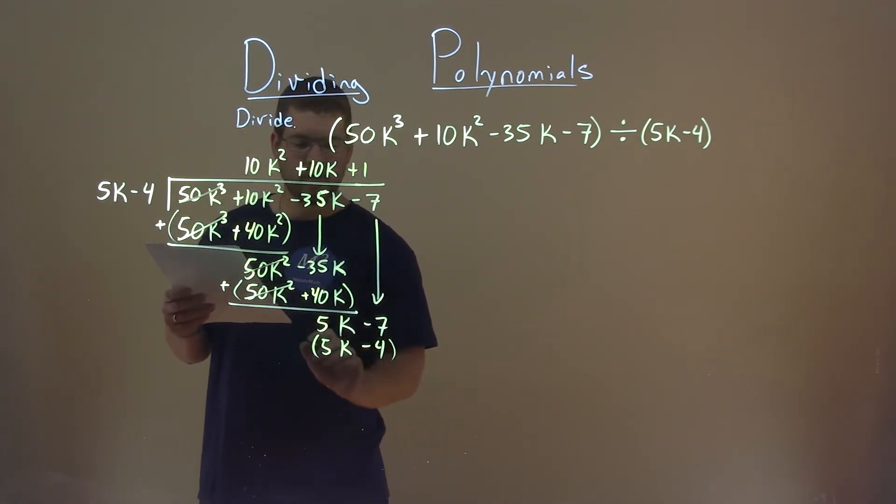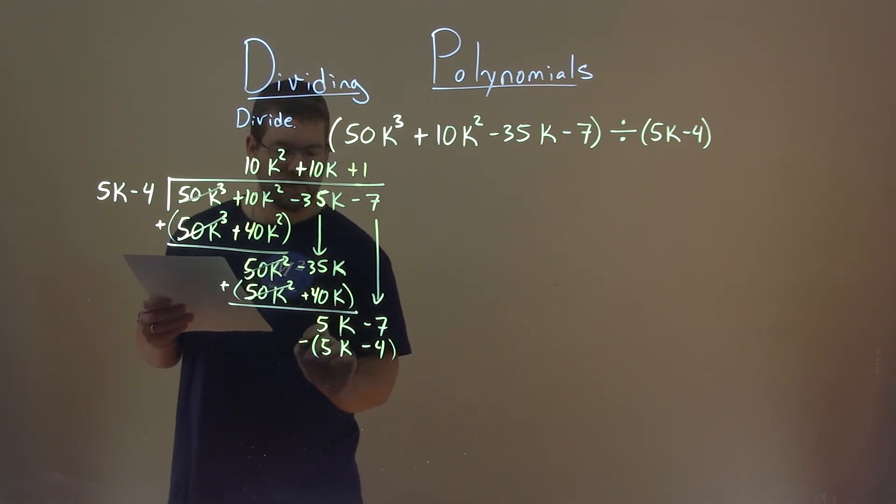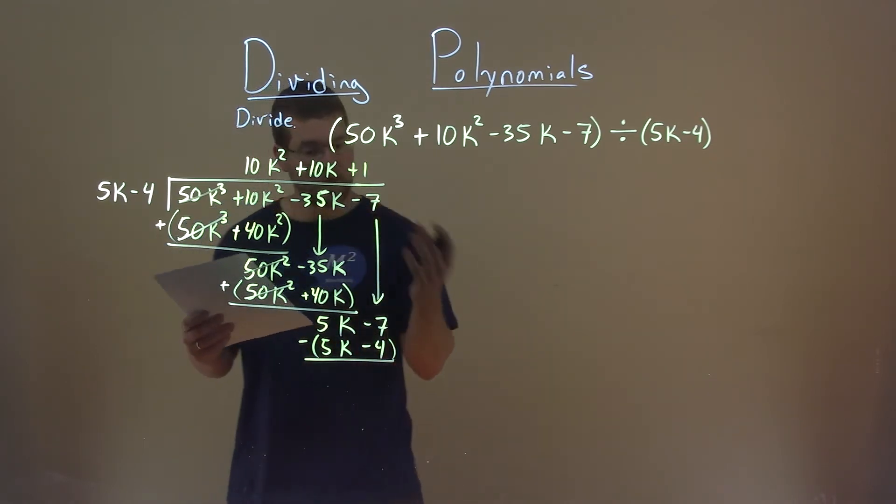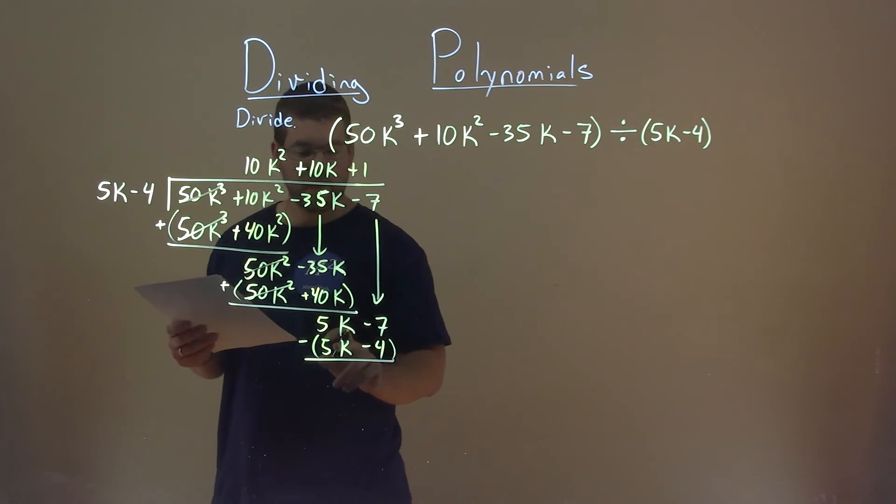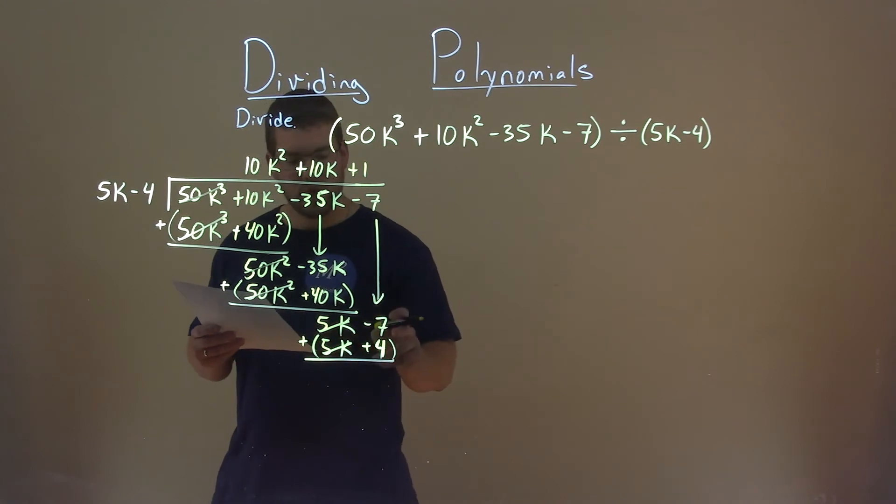Now you've been good with your negatives the whole time. Don't mess it up now. We're subtracting the whole thing in parentheses. 5k minus 5k is just 0. Cancels out. We're good. Negative 7 minus a negative 4 is like adding a positive 4. So negative 7 plus a positive 4 is a negative 3.